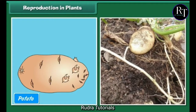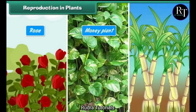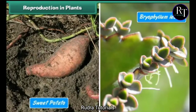Potato can be developed from an underground stem having buds on it. Rose, Money plant, and Sugar cane can be developed from stem cuttings. Bryophyllum can be developed from its leaves. Sweet potato grows from its roots.